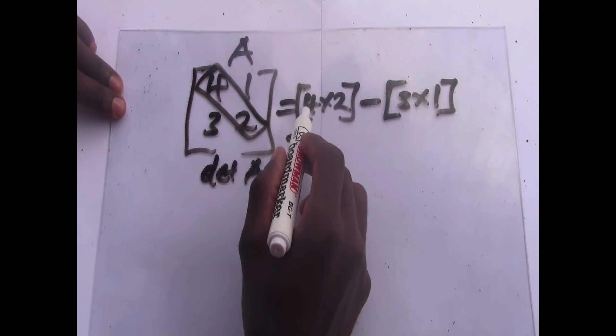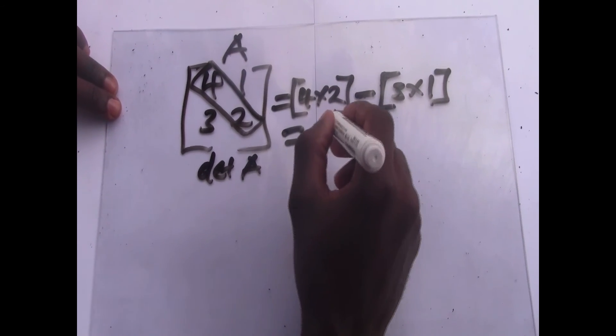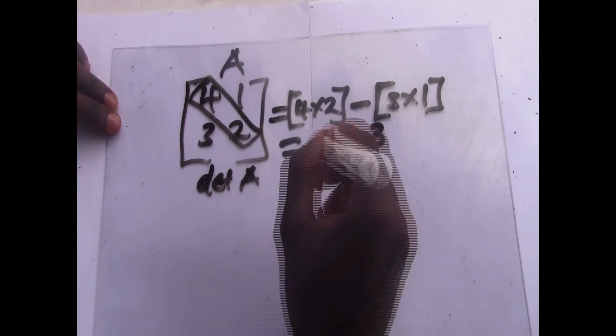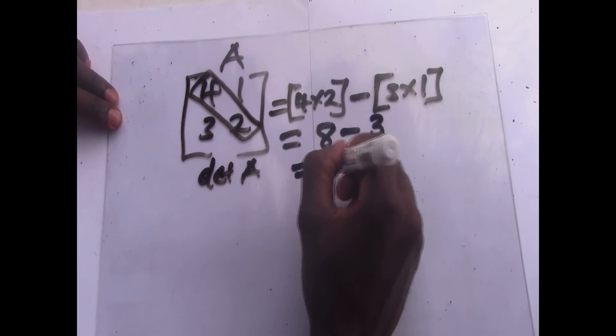So our answer here will be 4 times 2. You're going to get what? 8. 8 subtracted by 3. And then our answer is what? 5.